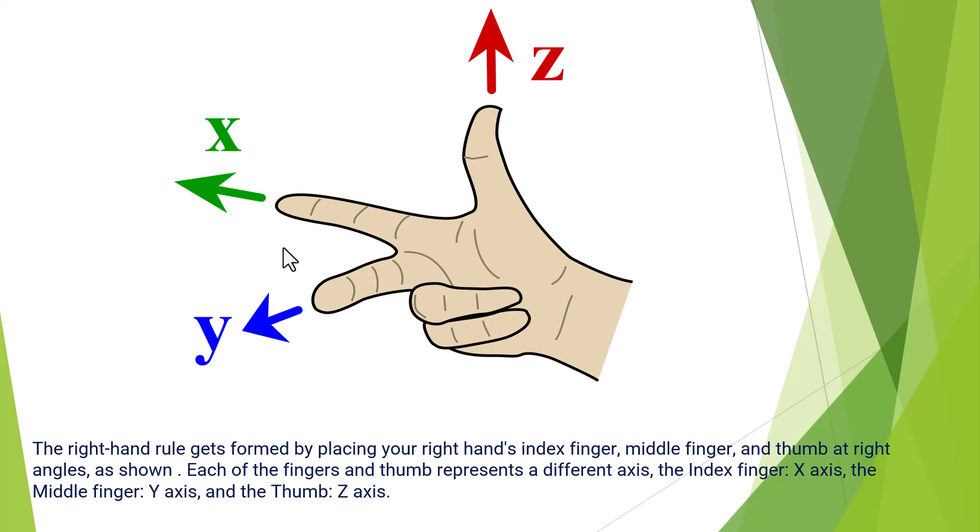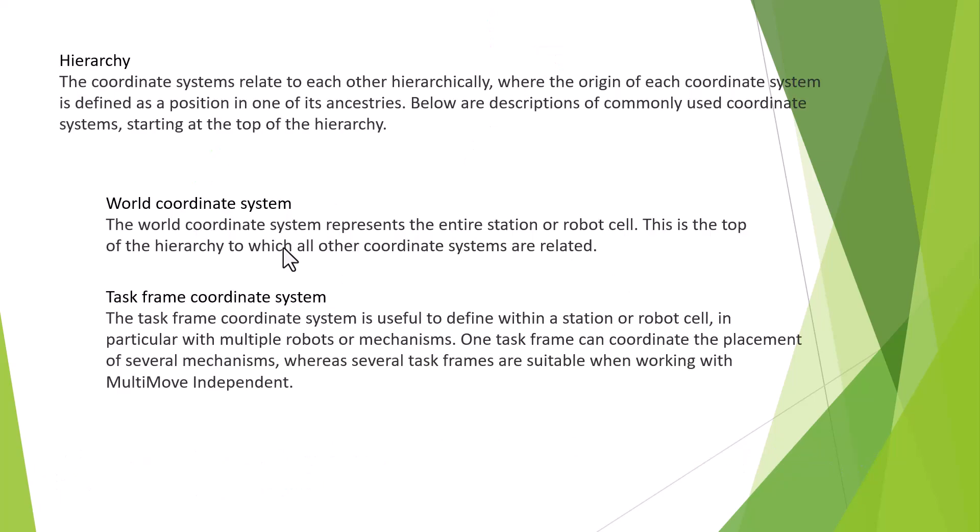In the robot, it has a few coordinate systems. One is the top one, the world coordinate system. Second one is task frame coordinate system. Each robot has a base, that means every station, every robot has a position. It is the coordinate system, the world coordinate system. It is the hierarchy from the world coordinate system.